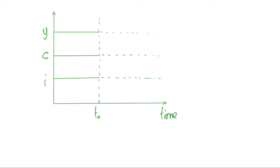In the previous video we looked at deriving the golden rule steady state level and talked about how policymakers need to adjust the savings rate in order to transition to the golden rule steady state. In this video I'm going to talk a bit more about this transition.